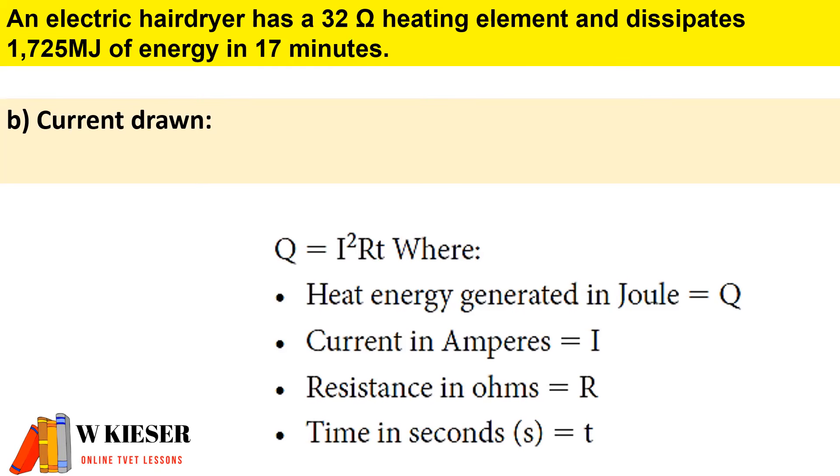To calculate the current drawn, the heat generated in a circuit is directly proportional to the square of the current, the resistance, and the time that current flows. Therefore, to manipulate the equation to calculate current, it will be the square root of the heat generated divided by resistance and time.